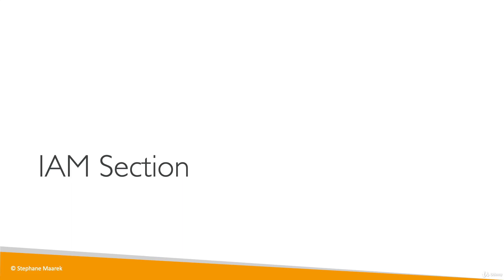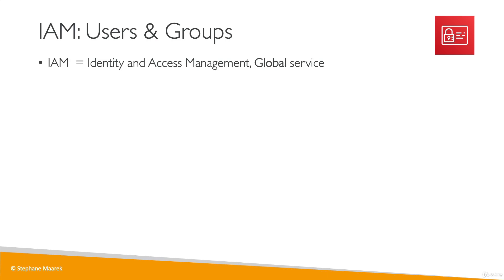Welcome to the first deep dive on an AWS service. The first one is called IAM, which stands for Identity and Access Management. It is a global service because in IAM, we are going to create our users and assign them to groups.